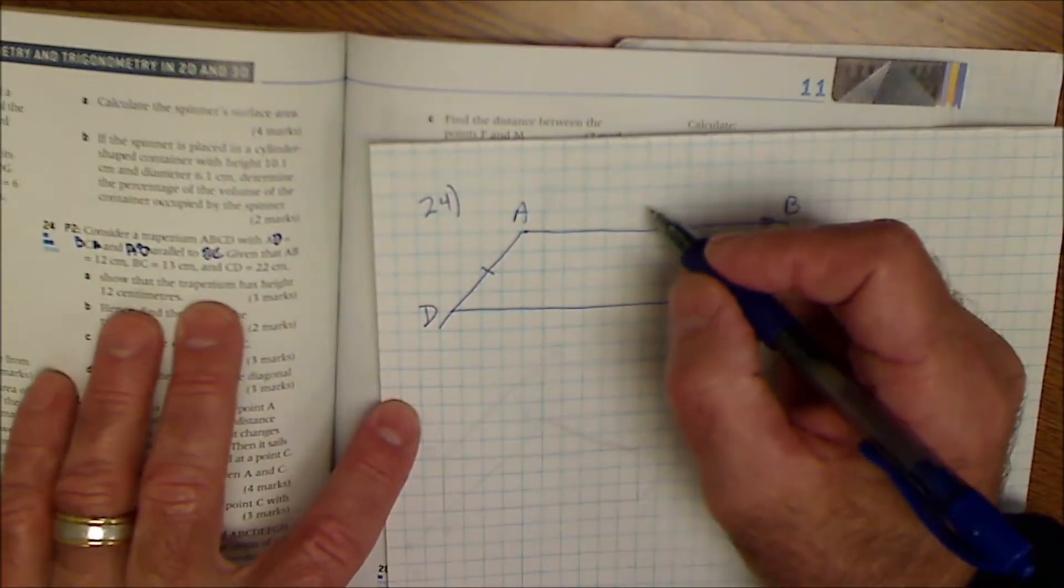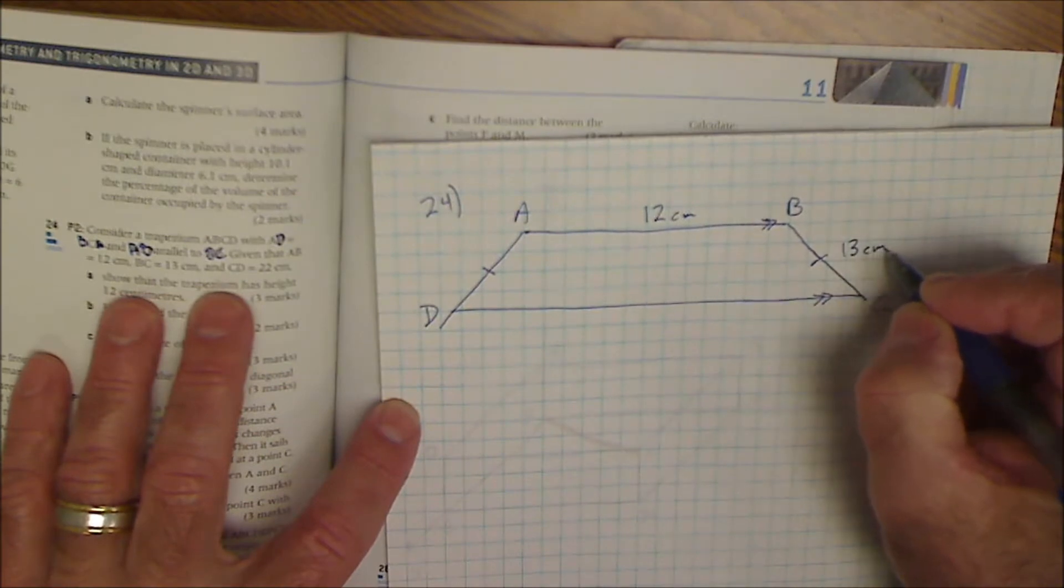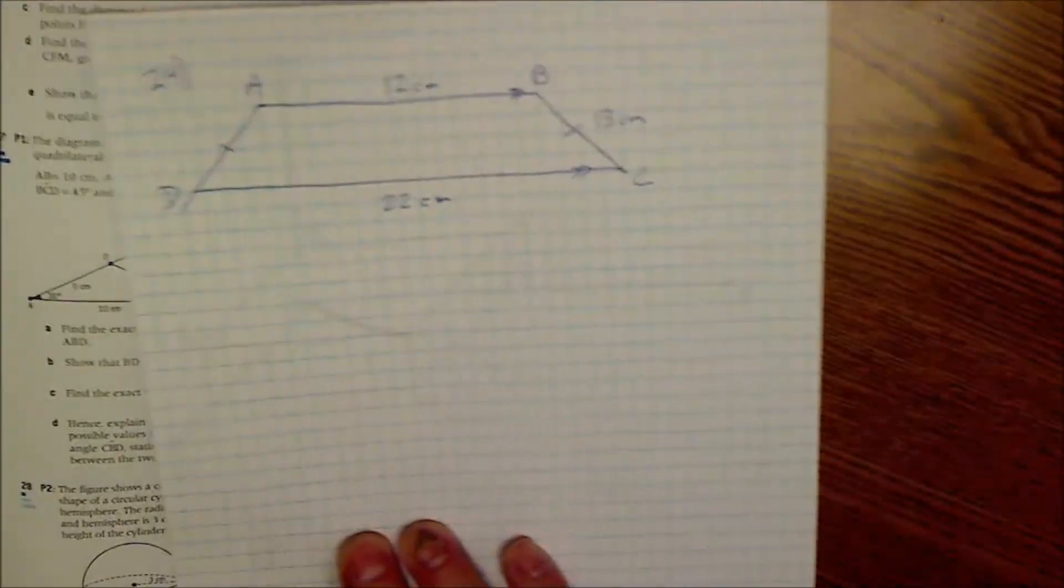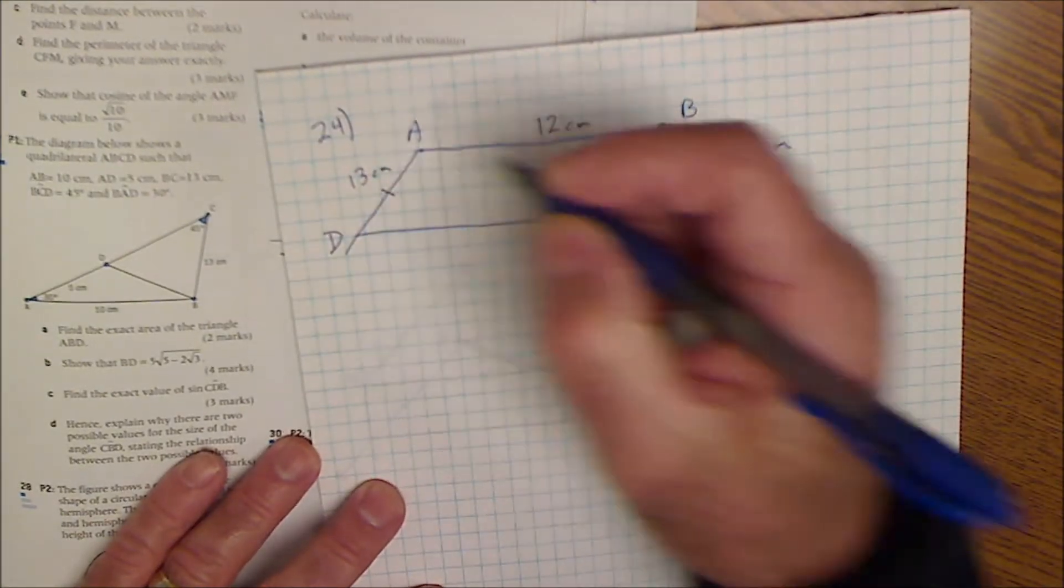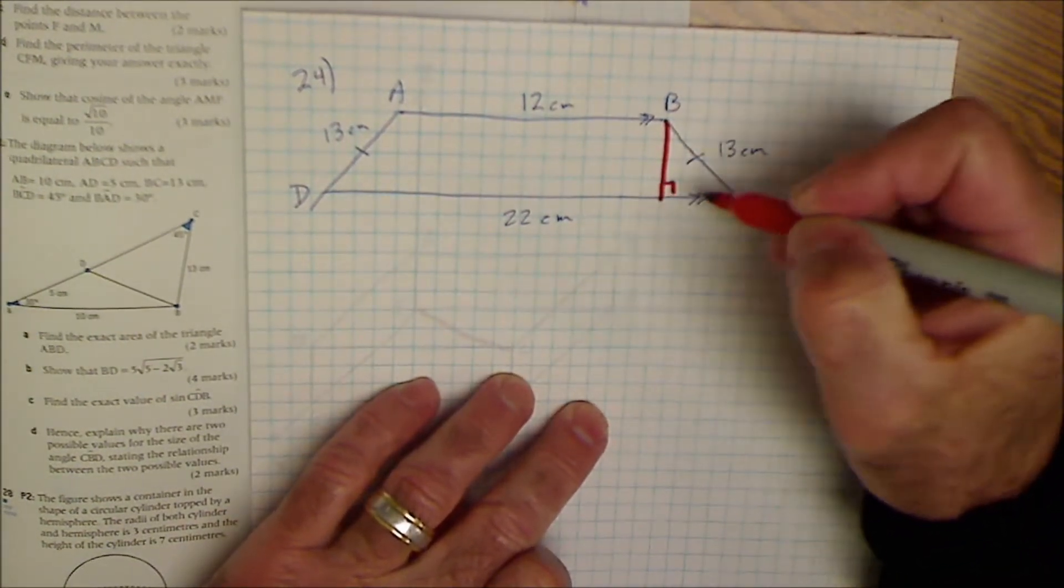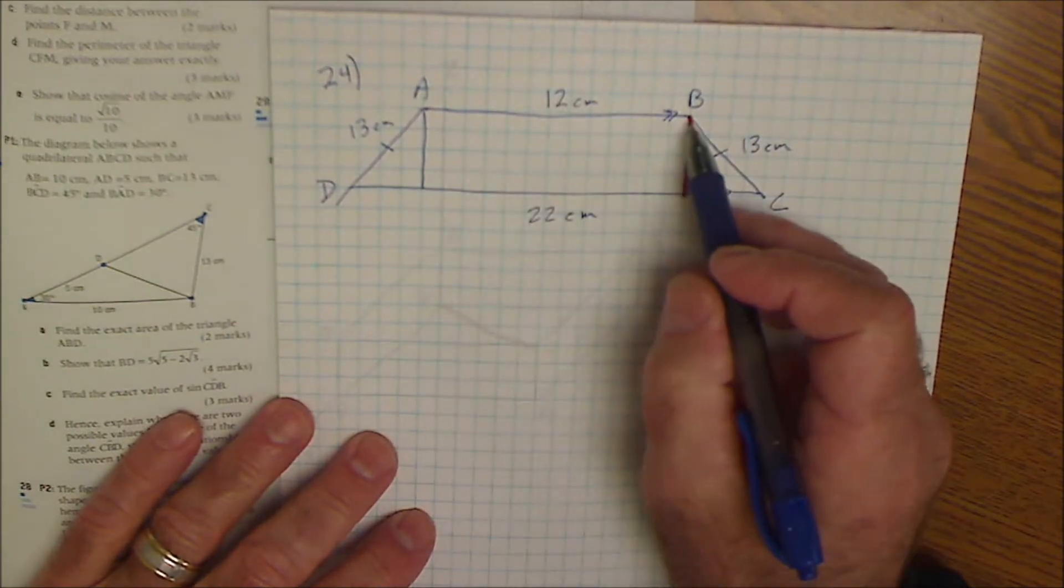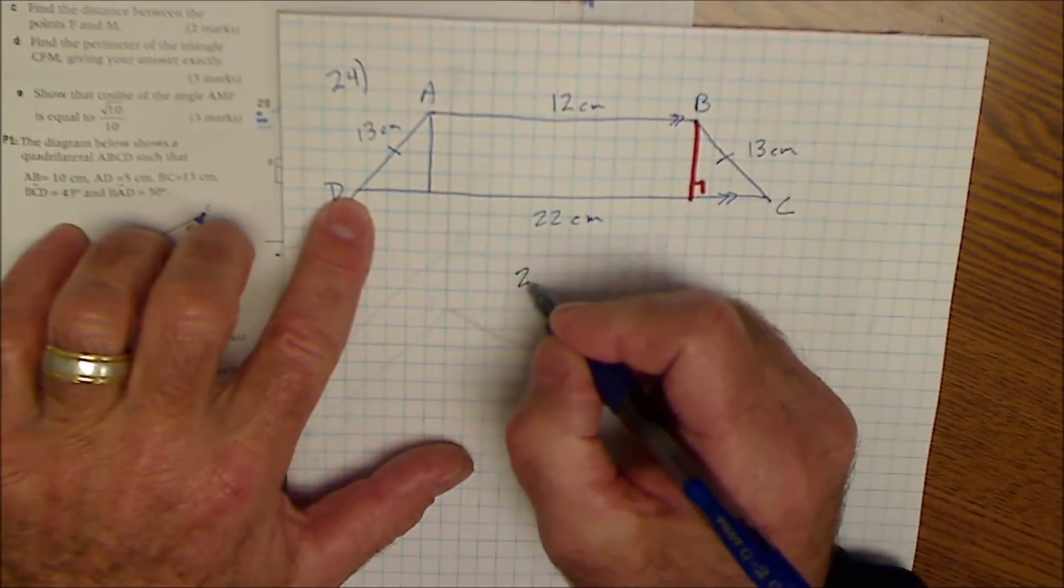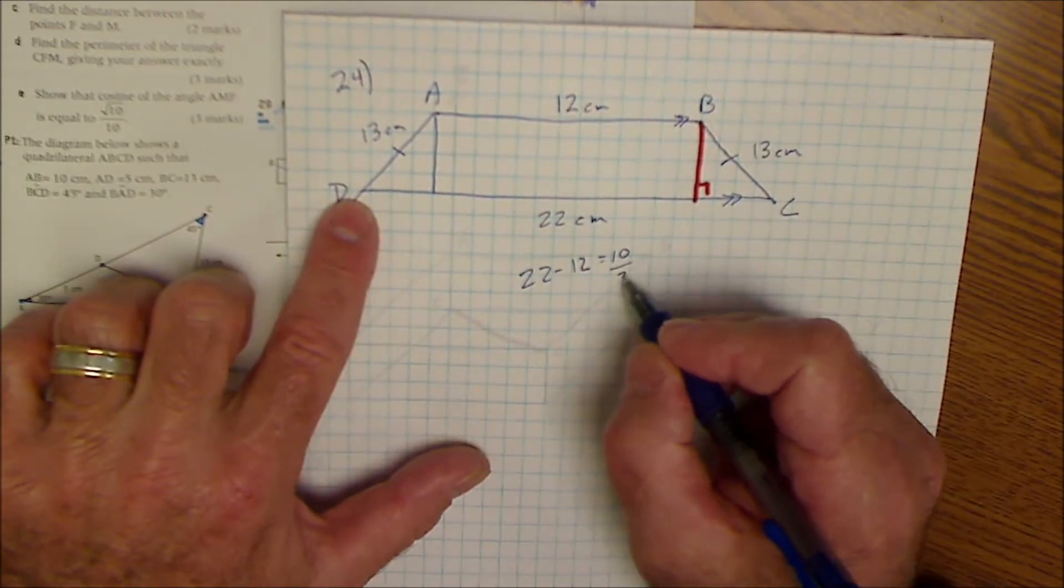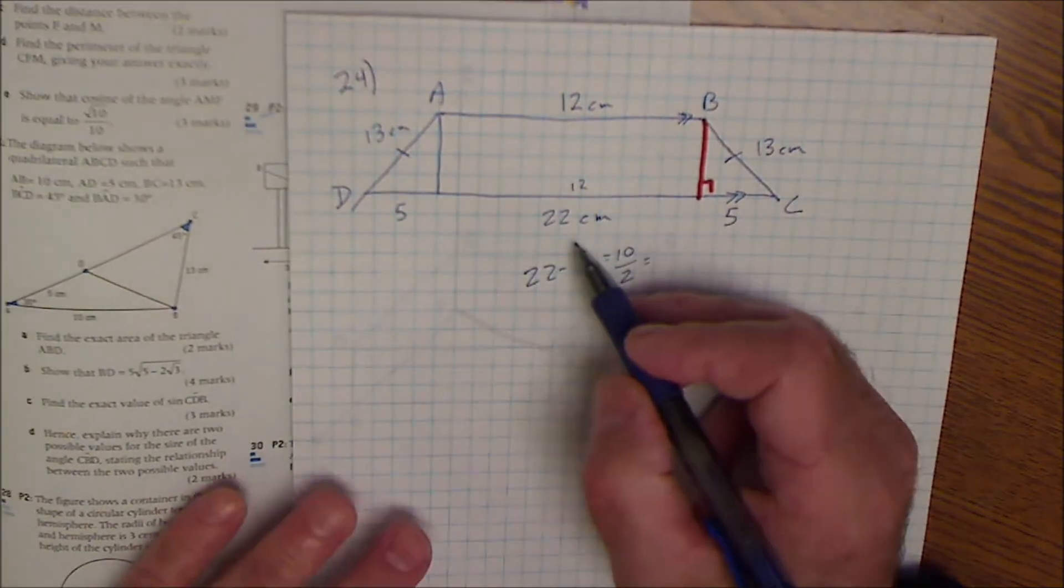Given that AB is equal to 12 centimeters, BC is 13 centimeters, and CD is 22 centimeters. So if that's 13 this is also 13 because they're equal. And it says the height is 12 centimeters. This overall length is 12, this overall length is 22. 22 minus the 12 gives me 10. So the length of this plus this is 10. I divide that by 2 to get this length is 5, and then this is 12 to give me the 22 centimeters.